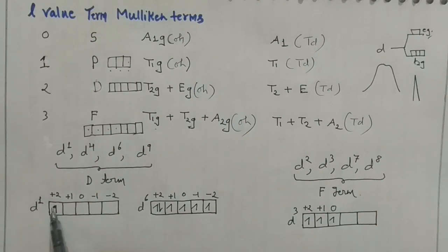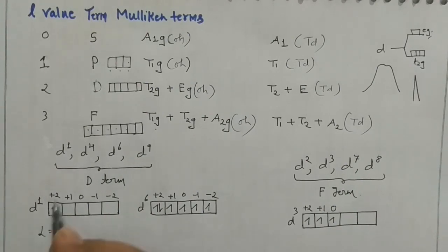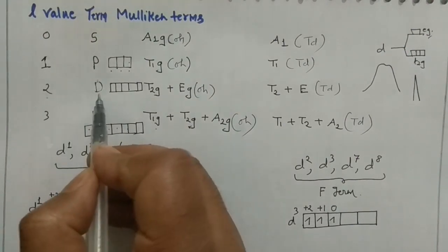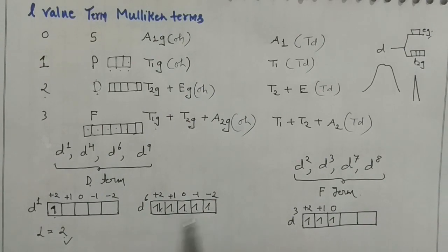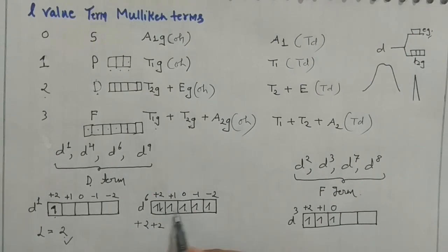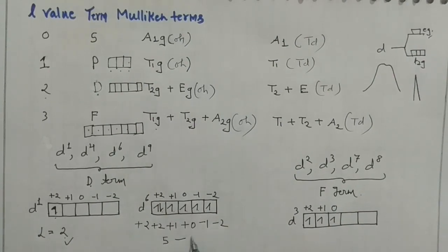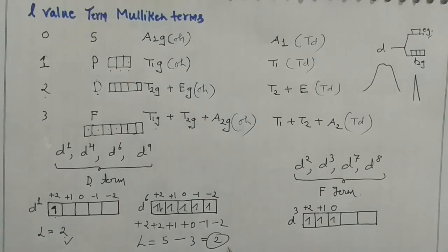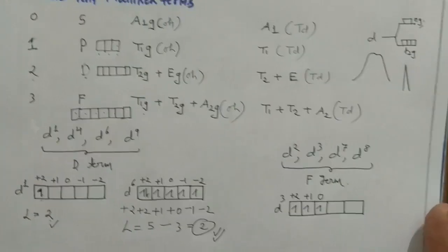For d6: 6 electrons fill the orbitals as +2, +2, +1, 0, -1, -2. Two electrons in +2 give +2 + 2 = 4, then +1, 0 gives sum = 5, minus 1 and -2 brings total L = 2 again, so D term. Similarly for d4 and d9, you will get D term. For d2, d3, d7, d8, the ground state term is F. Let's verify with d3: filling gives +2, +1, 0, sum = 3, so L = 3 → F term.